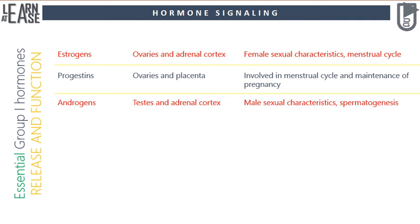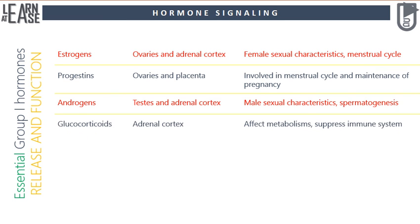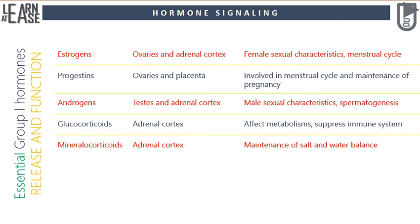Third, androgens — male sex hormones produced and released by the testes and adrenal cortex, essential for male sexual characteristics and spermatogenesis. Fourth, glucocorticoids — hormones produced and released by the adrenal cortex that affect metabolism and suppress the immune system.